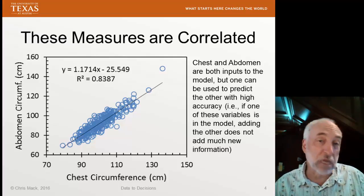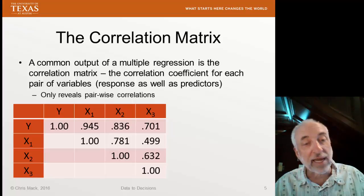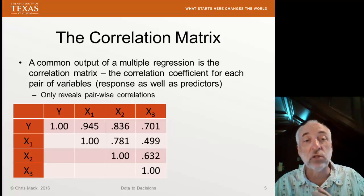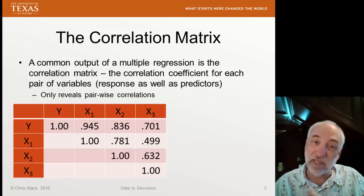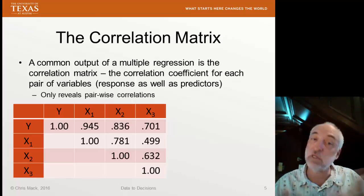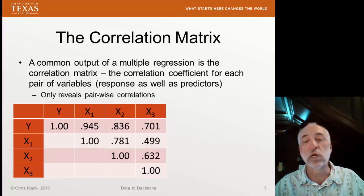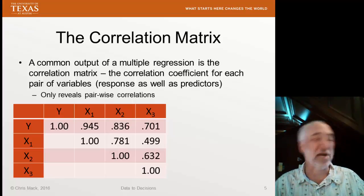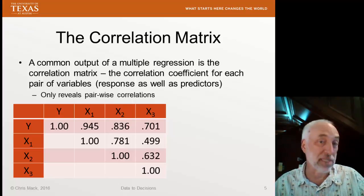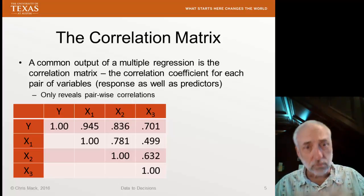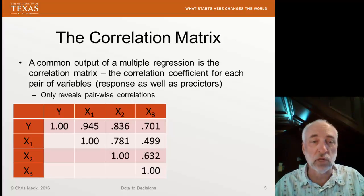If you have lots of variables, you'll generally try to characterize the pairwise correlations using the correlation matrix. This only tells us about pairwise correlations, and there can be more complicated correlations at work. We're going to see how to deal with more complicated correlations a little bit later, but the first thing you want to do is check out all of the pairwise correlations.